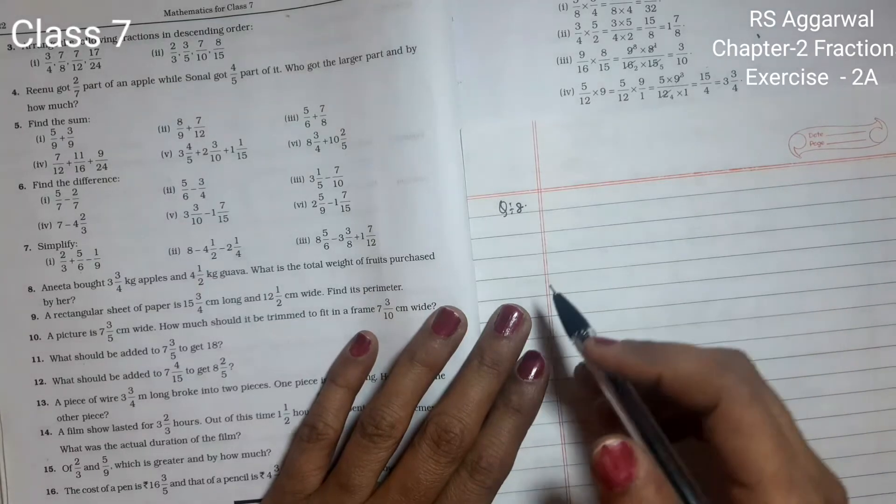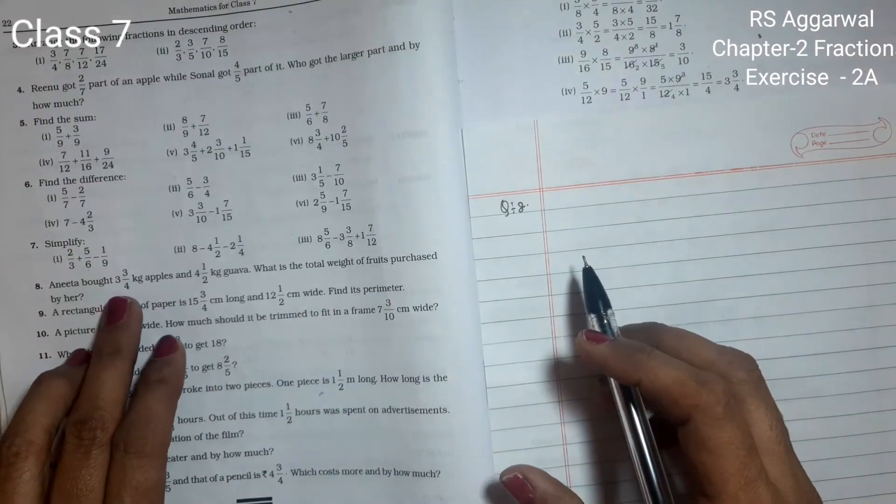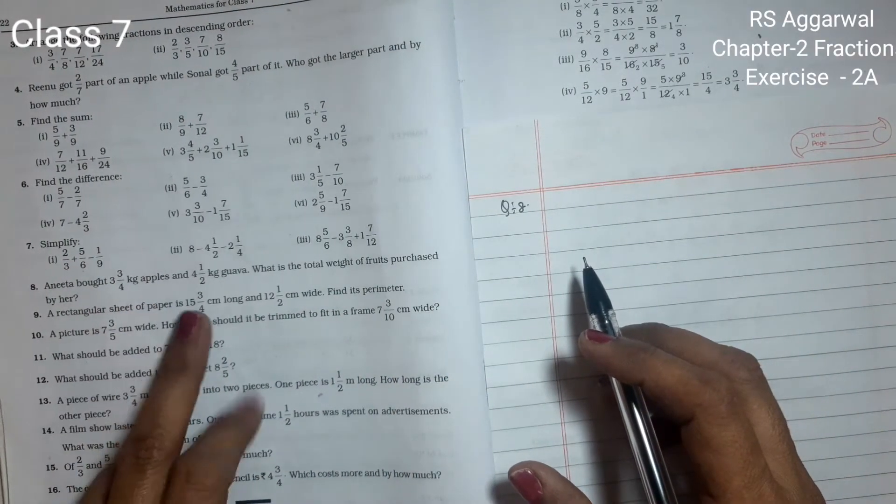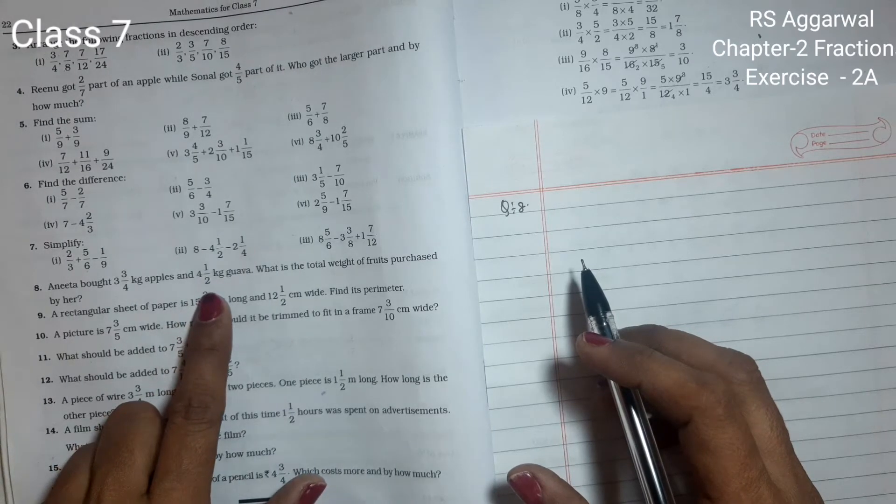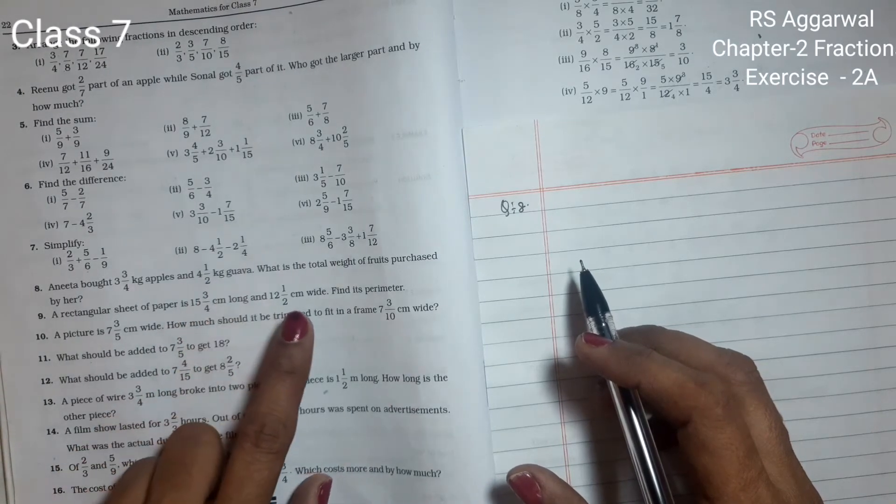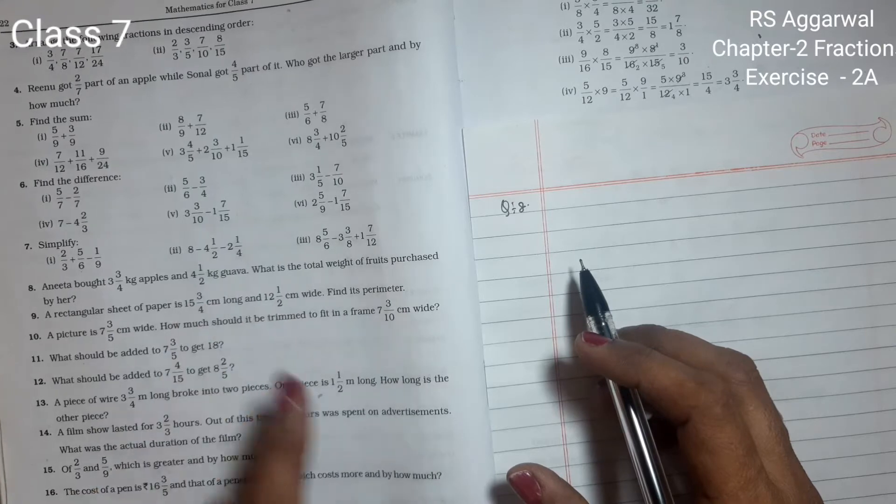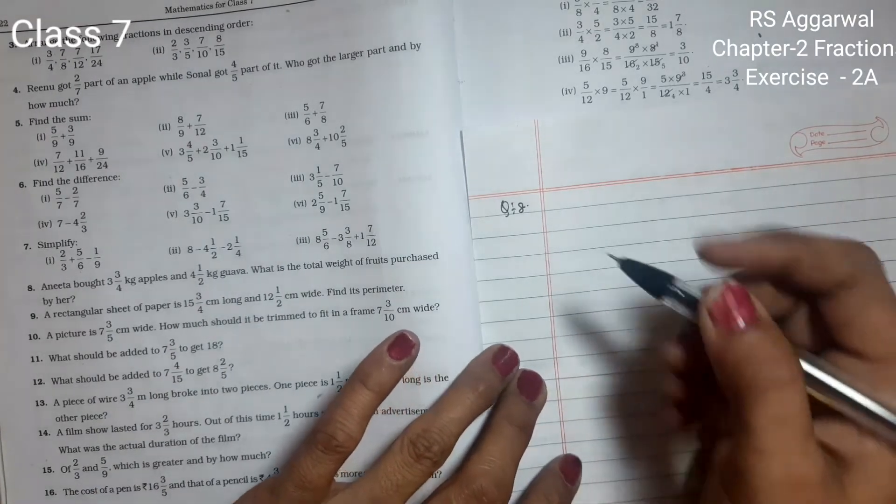Now we will do question 8. Anita bought 3 whole 3 upon 4 kg apples and 4 1 upon 2 kg guava. What is the total weight of the food purchased by her? Total weight - in this one we will add.